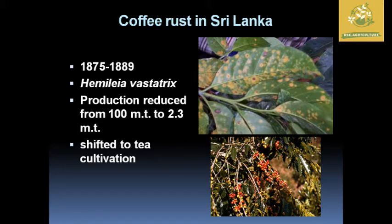An important disease in Sri Lanka was coffee rust, which caused the shift of cultivation from coffee to tea. This occurred during 1875 to 1886, caused by the organism Hemileia vastatrix. Production was reduced from 100 metric tons to just 2-point metric tons, forcing Sri Lanka to shift from coffee to tea cultivation.